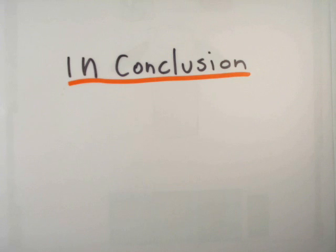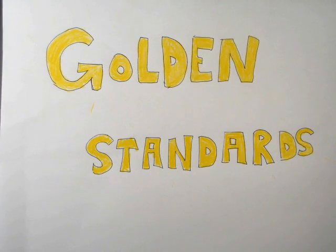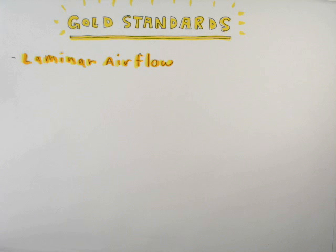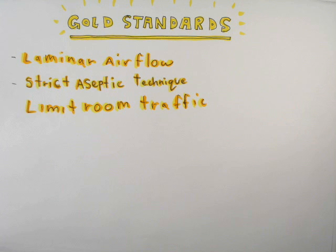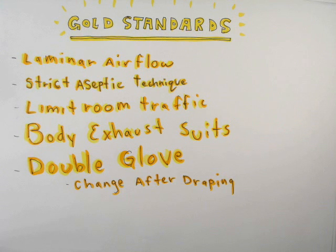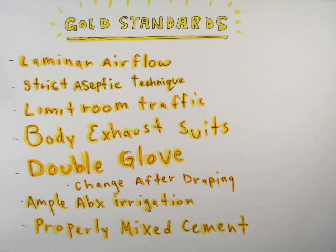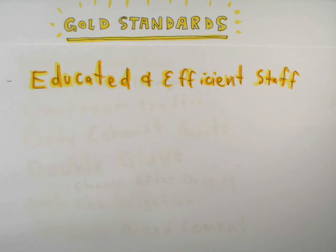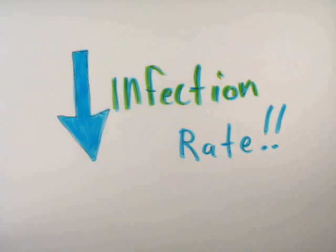In conclusion, the surgical team should strive to achieve these golden standards: a surgical theater with laminar air flow, staff following strict aseptic technique, policies limiting room traffic, policies requiring body exhaust suits for scrub staff, scrub staff wearing double gloves and changing the outer gloves after draping, and ample use of antibiotic irrigation and properly mixing cement to reduce imperfections. An educated and efficient staff can help reduce the surgical time and the amount of unintended contamination, resulting in a lower infection rate.